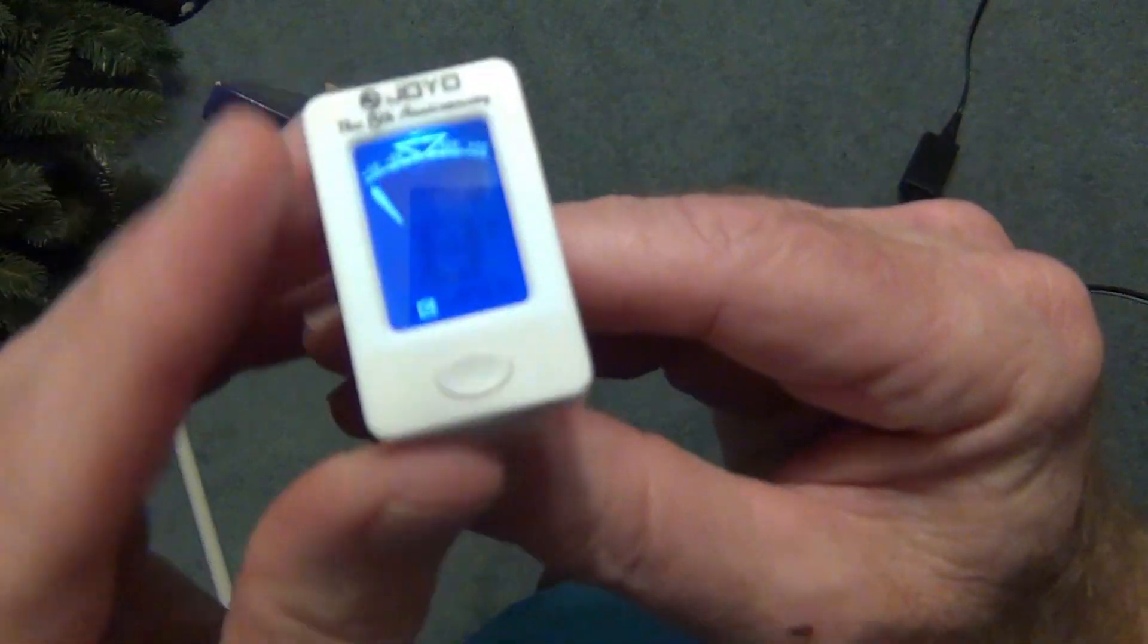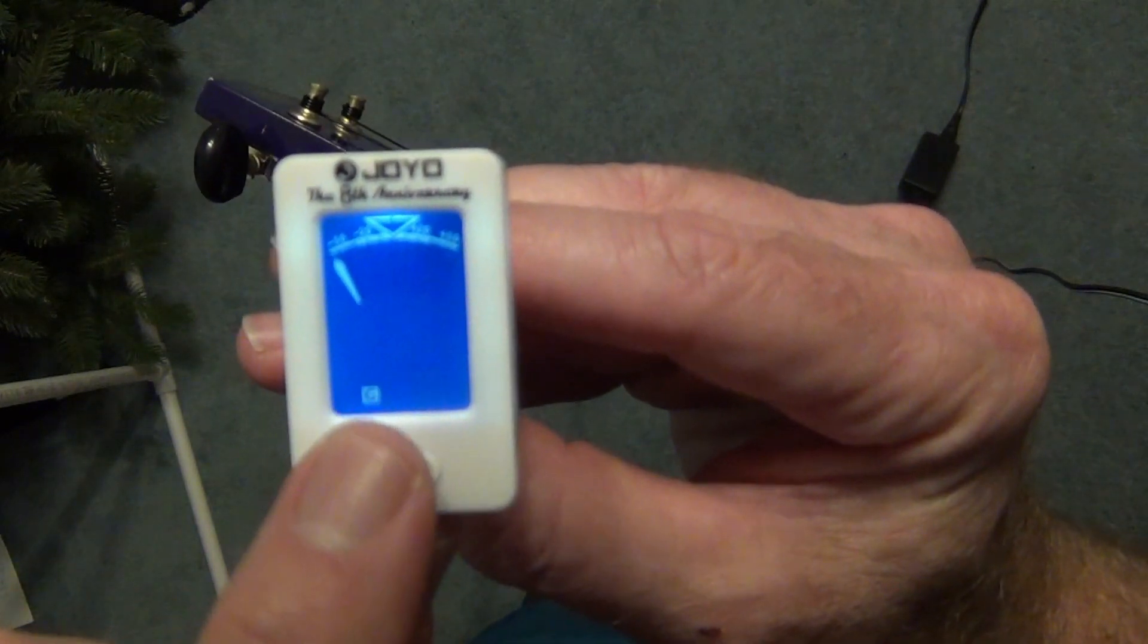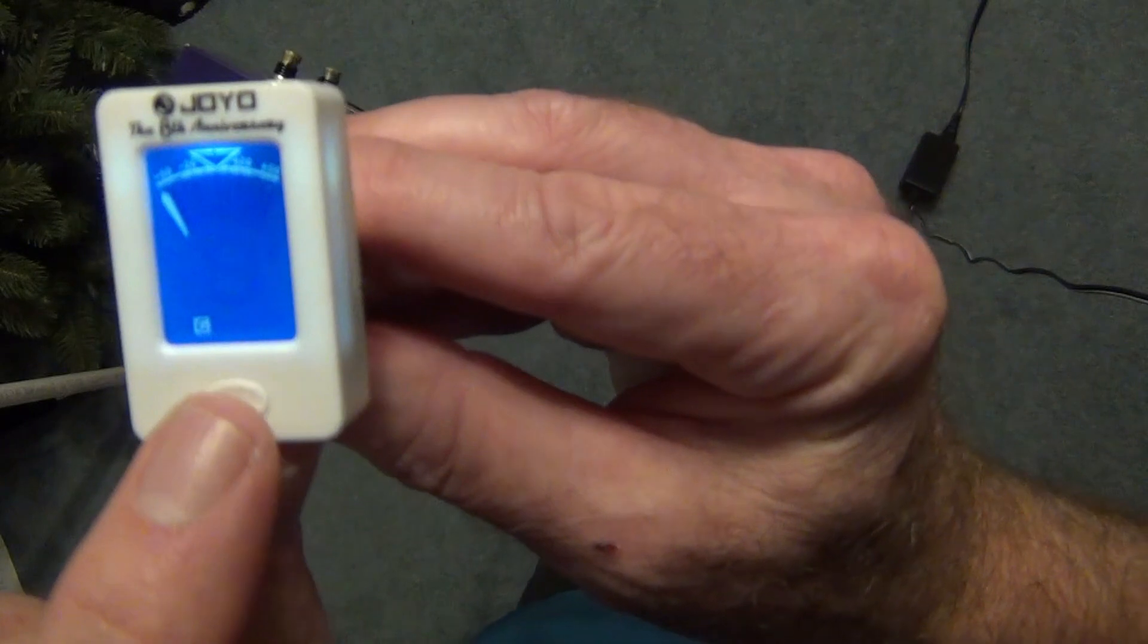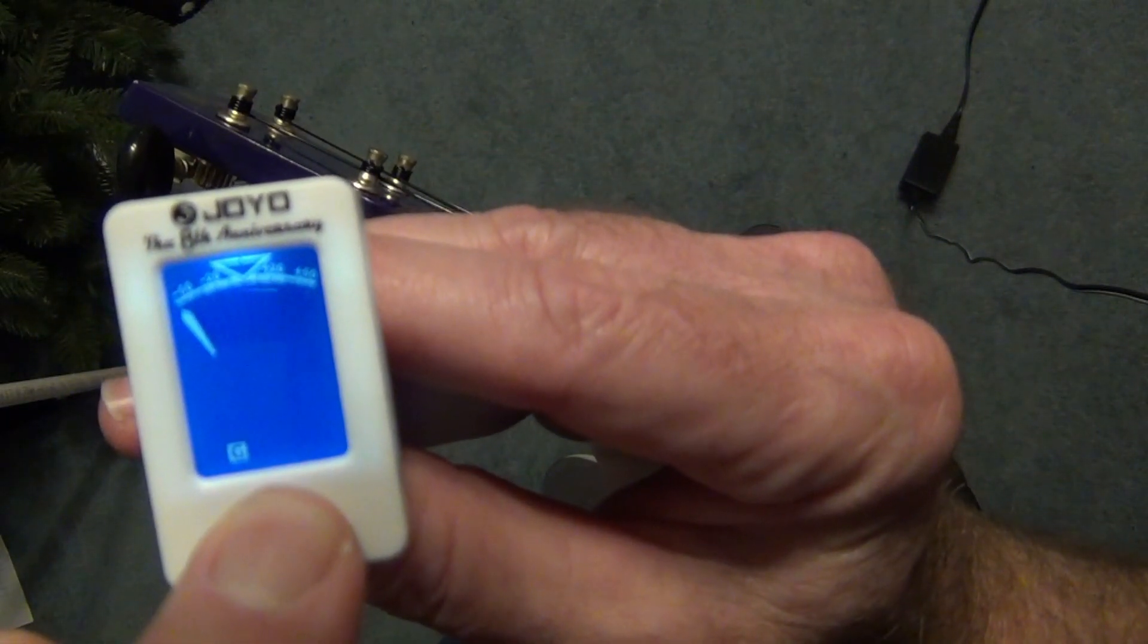I apologize, no matter what I do I can't get it to be in focus, so I'll tell you what these numbers are. Down at the bottom there's different letters. Like right now this one reads a G which stands for guitar, so I'll just toggle through.